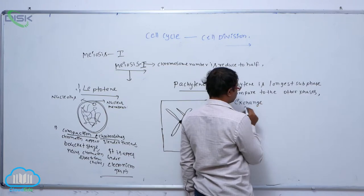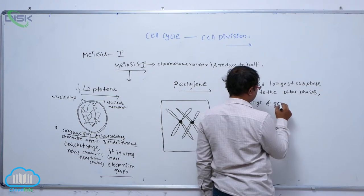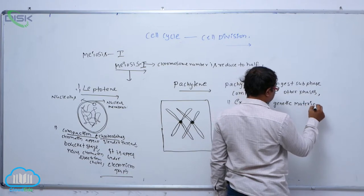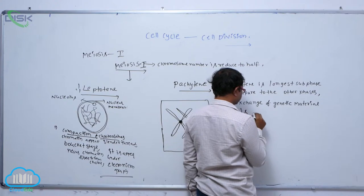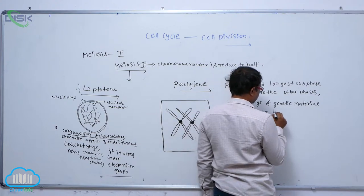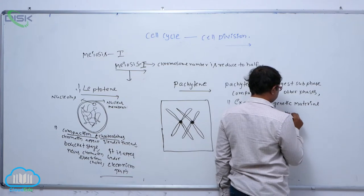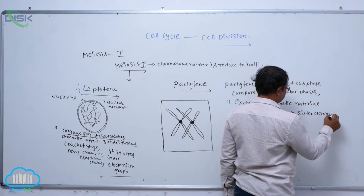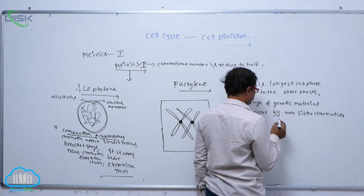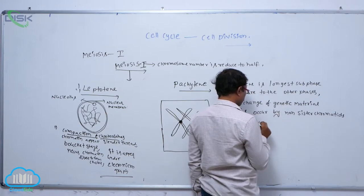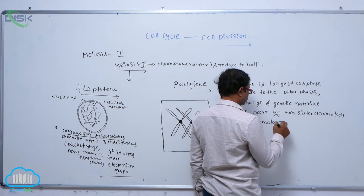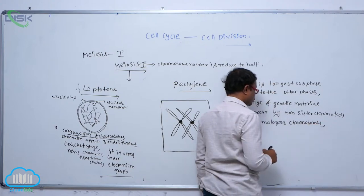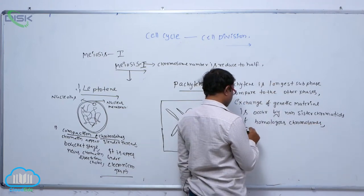Exchange of genetic material occurs by the non-sister chromatids of homologous chromosomes. This process is known as crossing over.